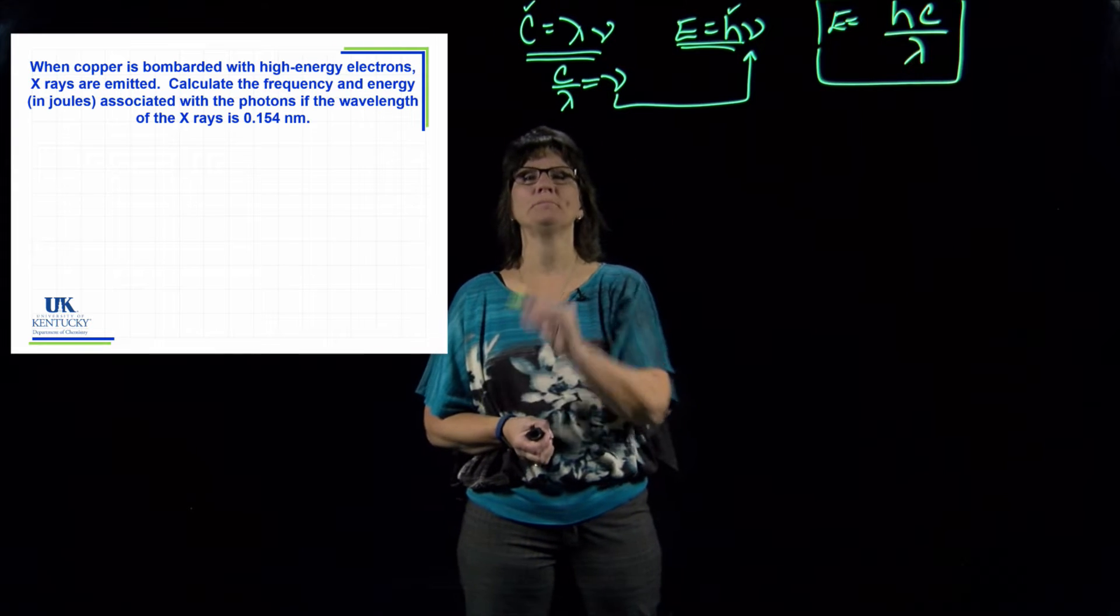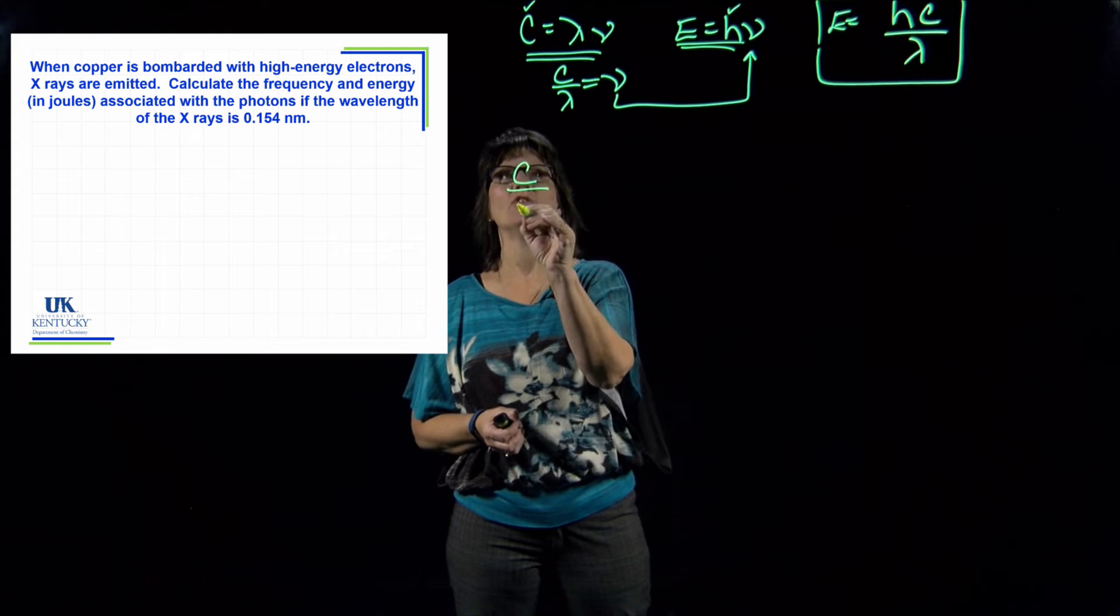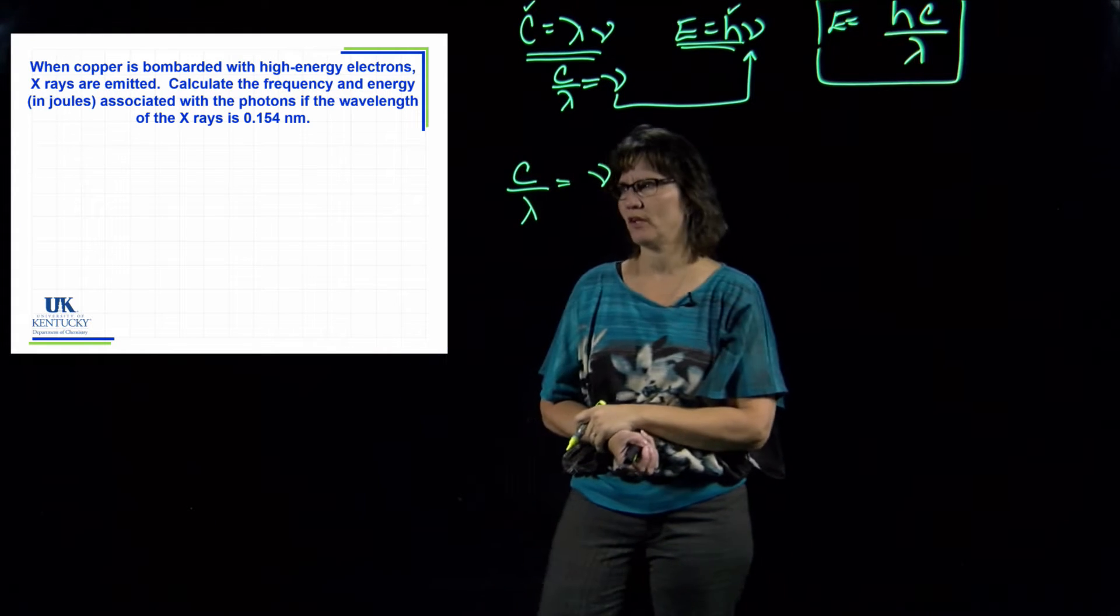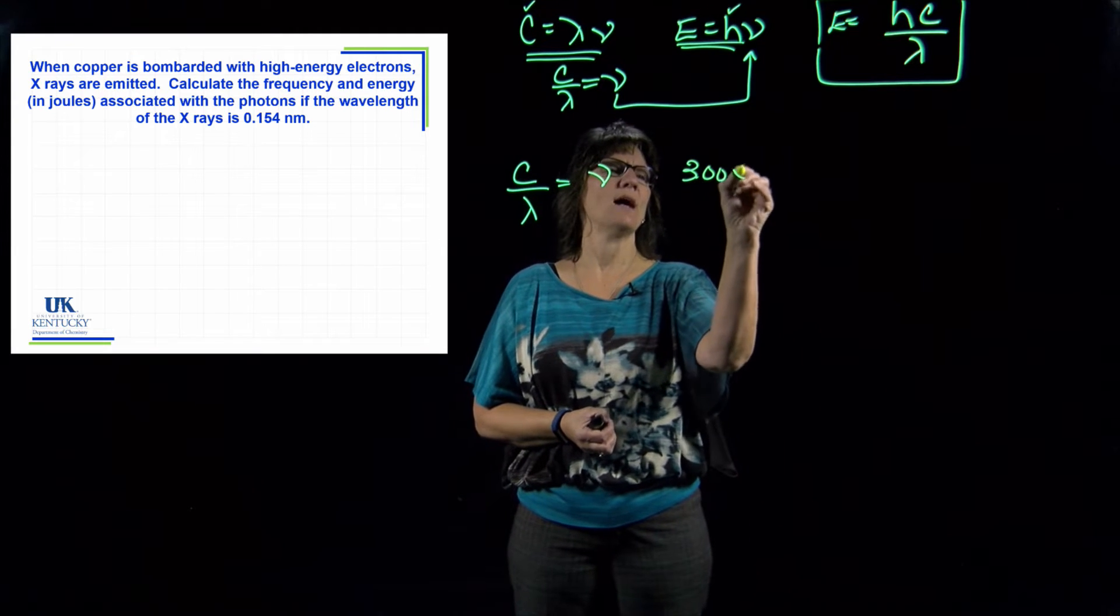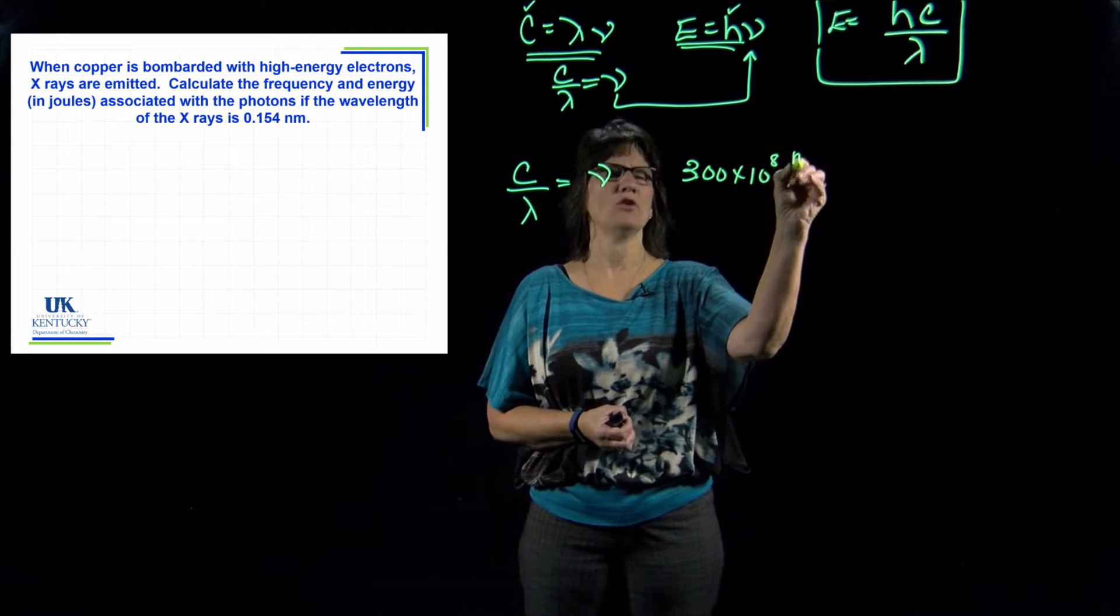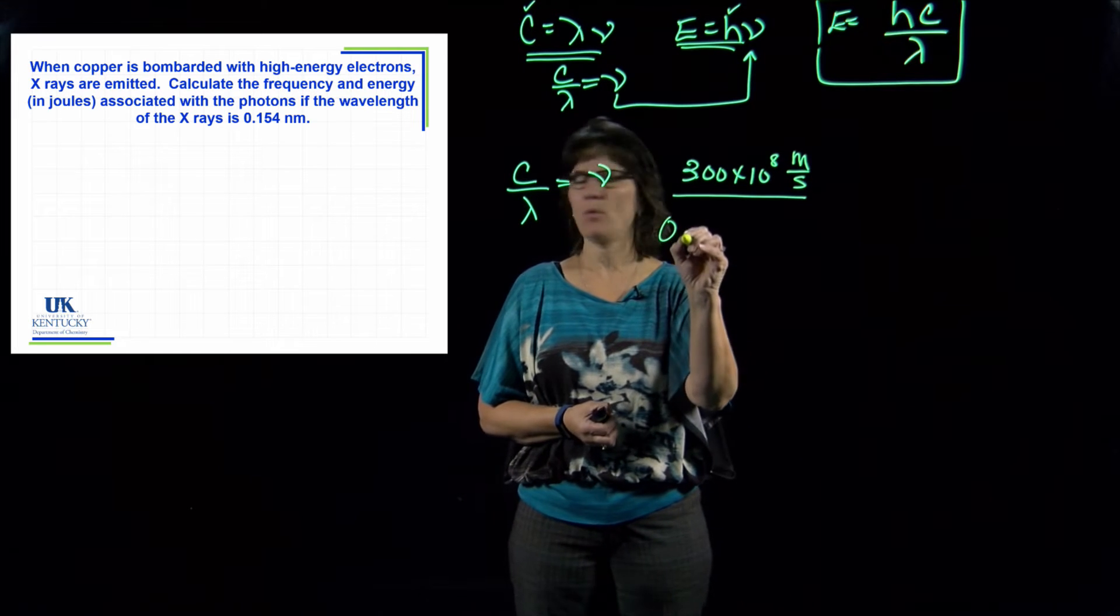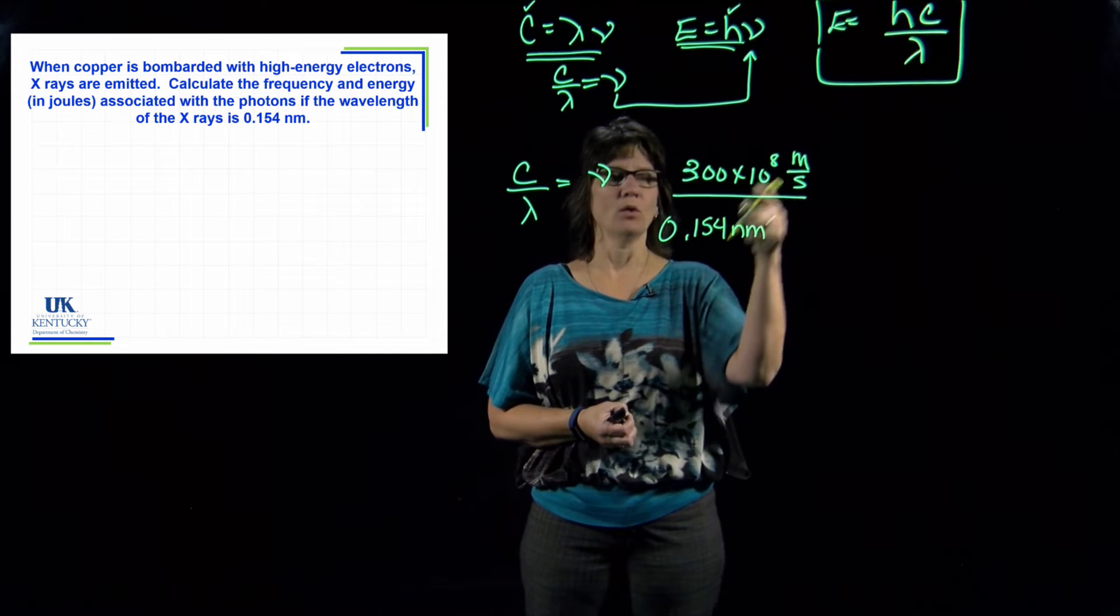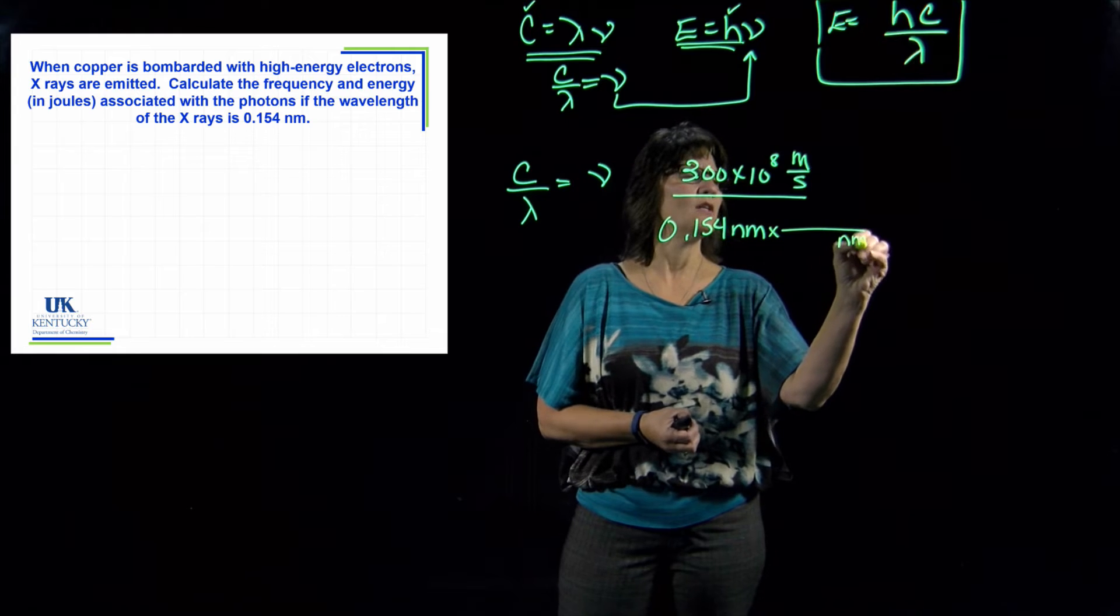So the first thing I would do is take this equation and solve for frequency: c over lambda equals frequency. So I can get that first. C is 3 times 10 to the eighth meters per second, wavelength is given to me as 0.154 nanometers.